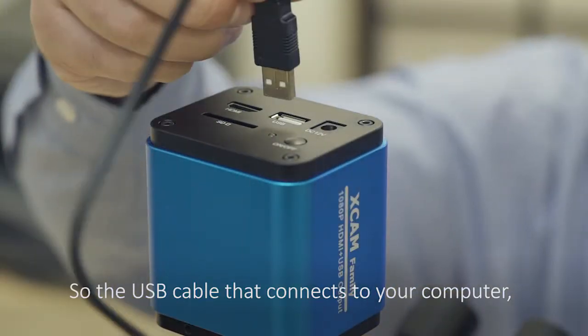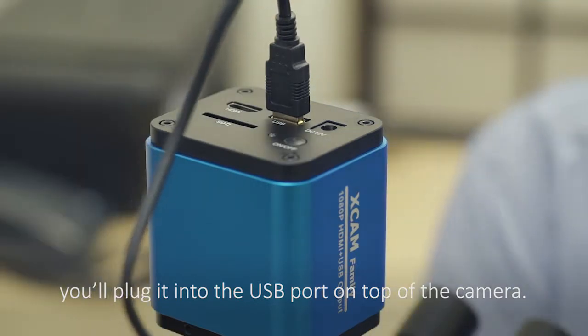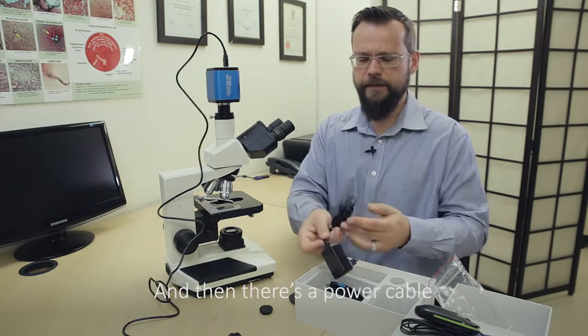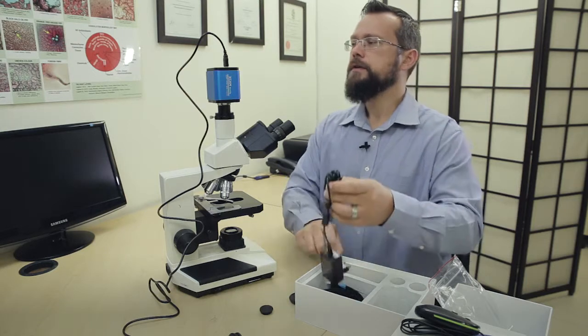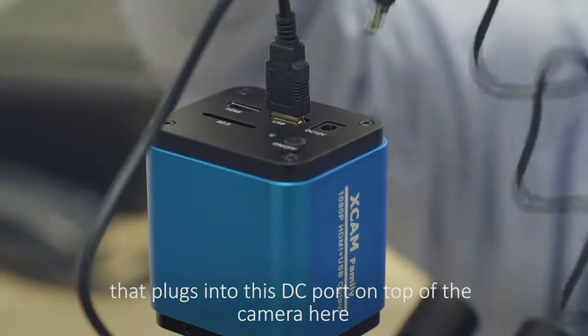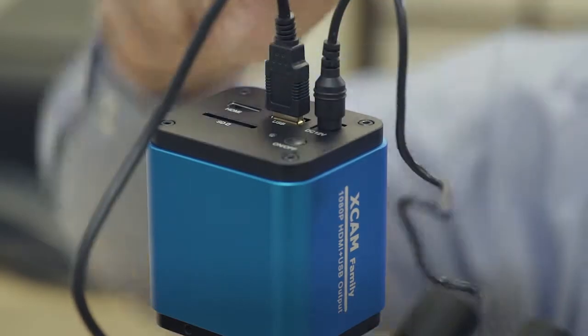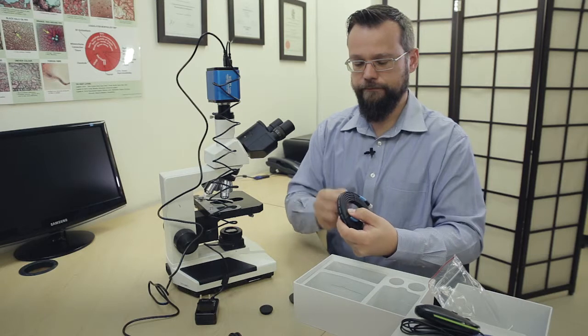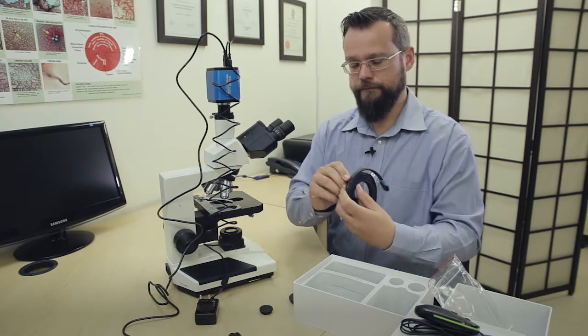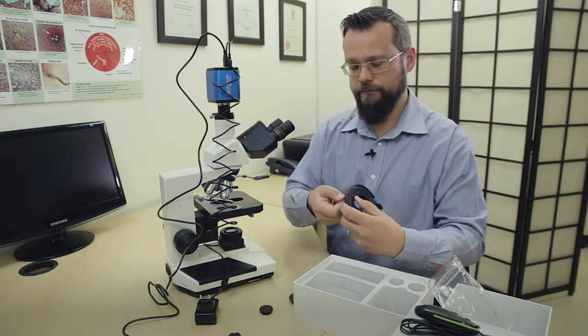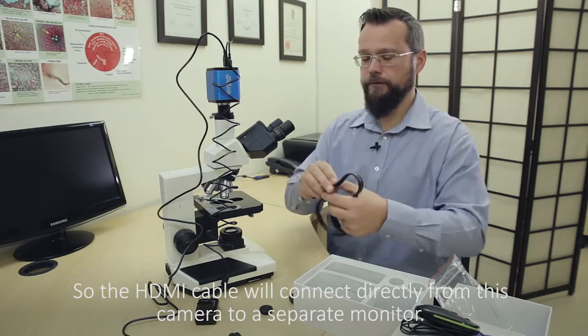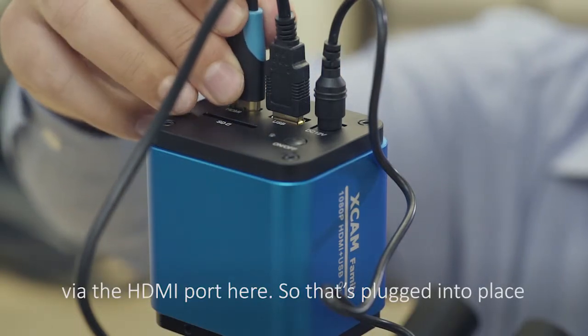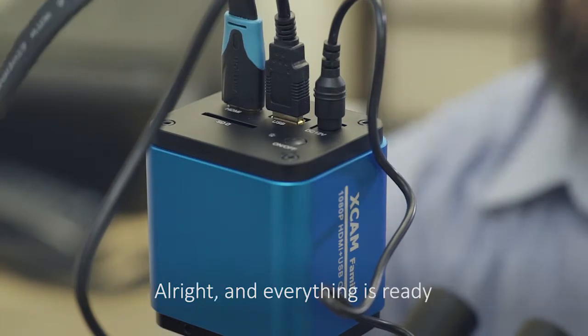So you have a USB cable that connects to your computer, so we plug it into the USB port at the top of the camera and the other end will plug into the USB port on your computer. Then there's a power cable that plugs into this DC port on the top of the camera here, and then your HDMI cable. So the HDMI cable will connect directly from this camera to a separate monitor via the HDMI port here, so that's plugged into place. All right and everything is ready.